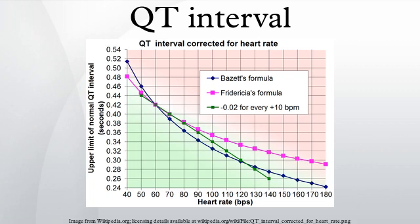For example, taking normal QTc at 0.42s, QT would be expected to be 0.42s or less at a heart rate of 60 BPM. For a heart rate of 70 BPM, QT would roughly be expected to be equal to or below 0.40s.